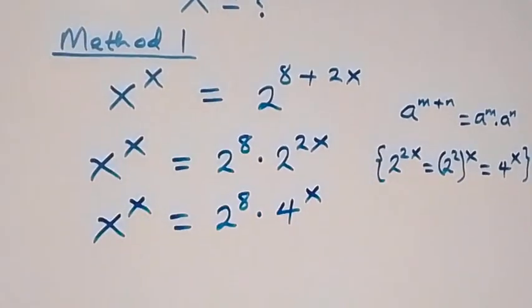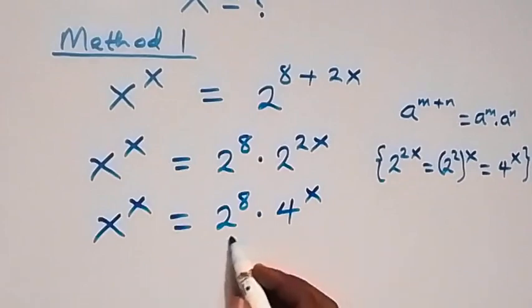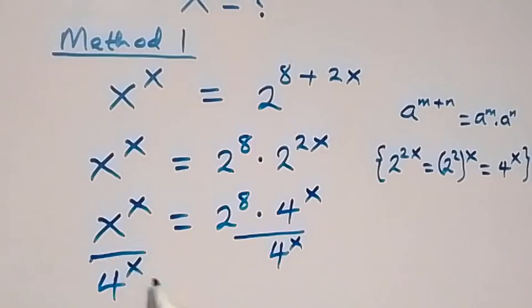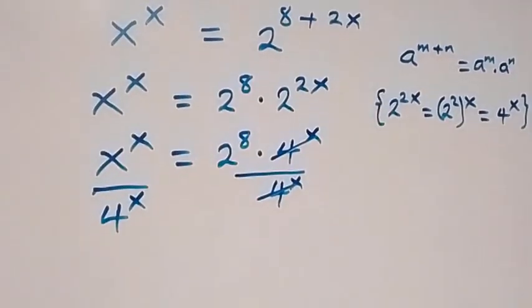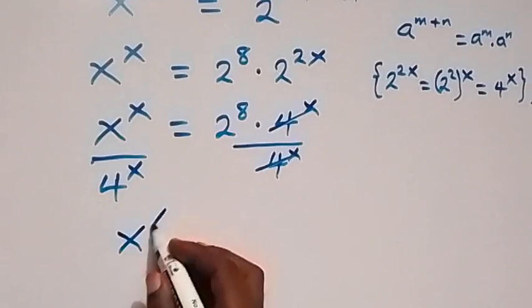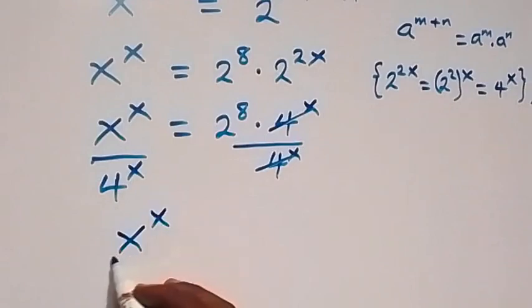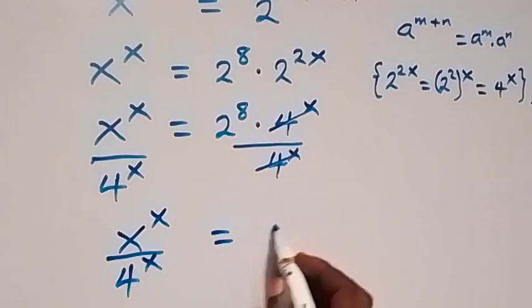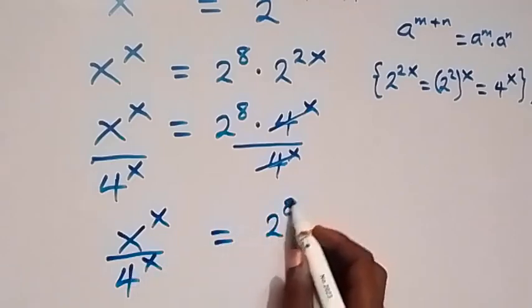Then let's divide both sides by 4 raised to power x. This side divided by 4 raised to power x, and this side divided by 4 raised to power x. Then 4 raised to power x will cancel out, and we are left with x raised to power x over 4 raised to power x, which now equals to 2 raised to power 8.